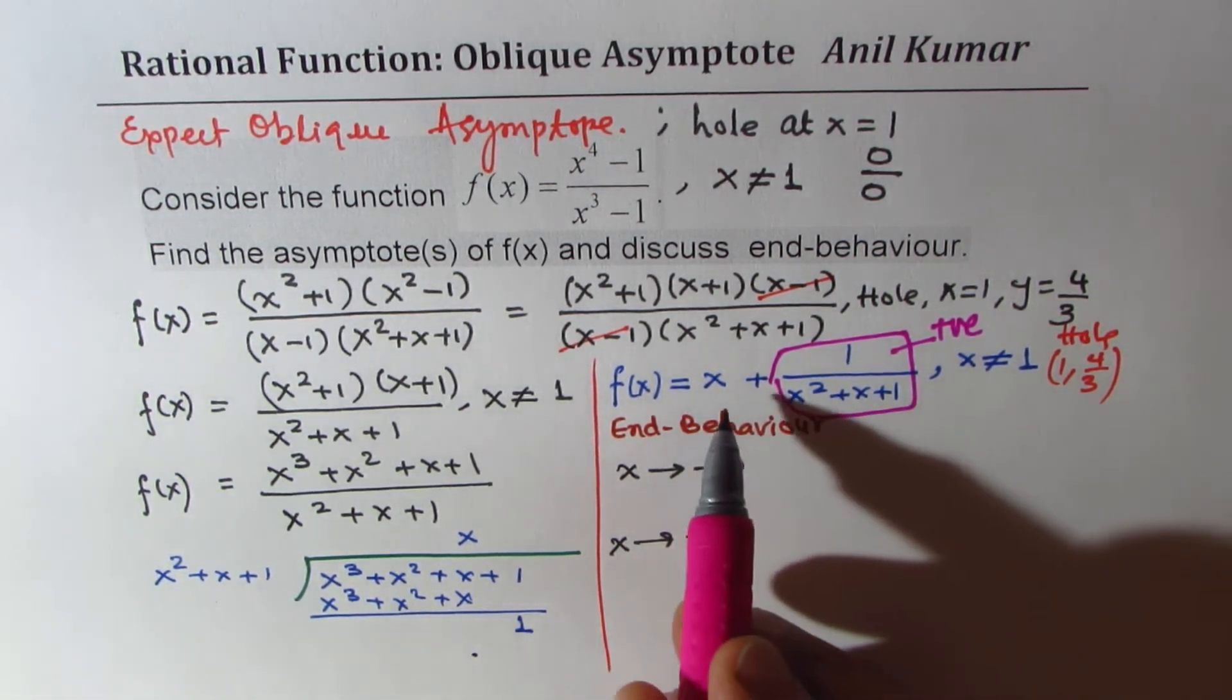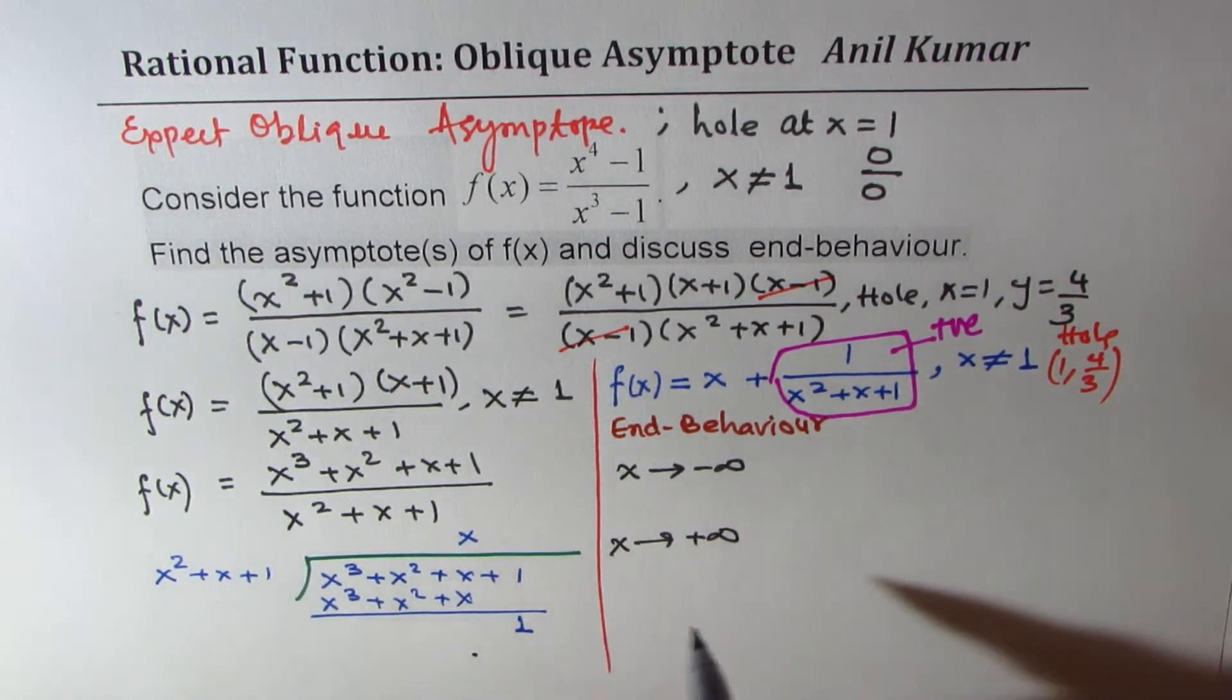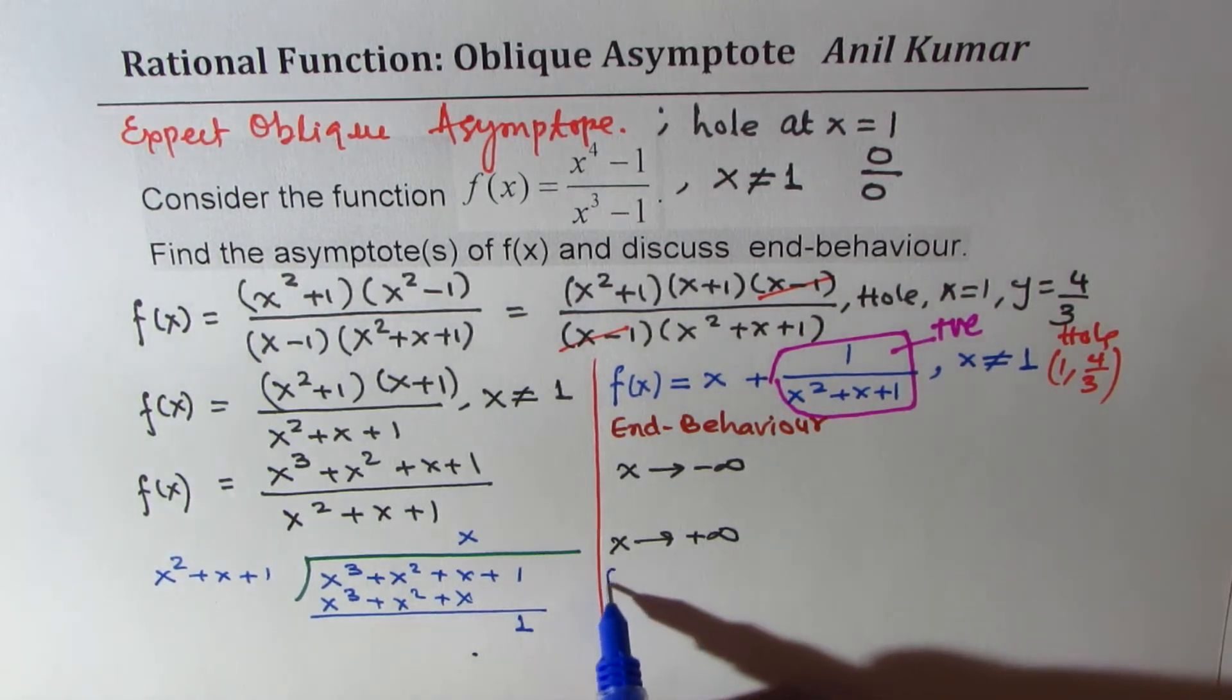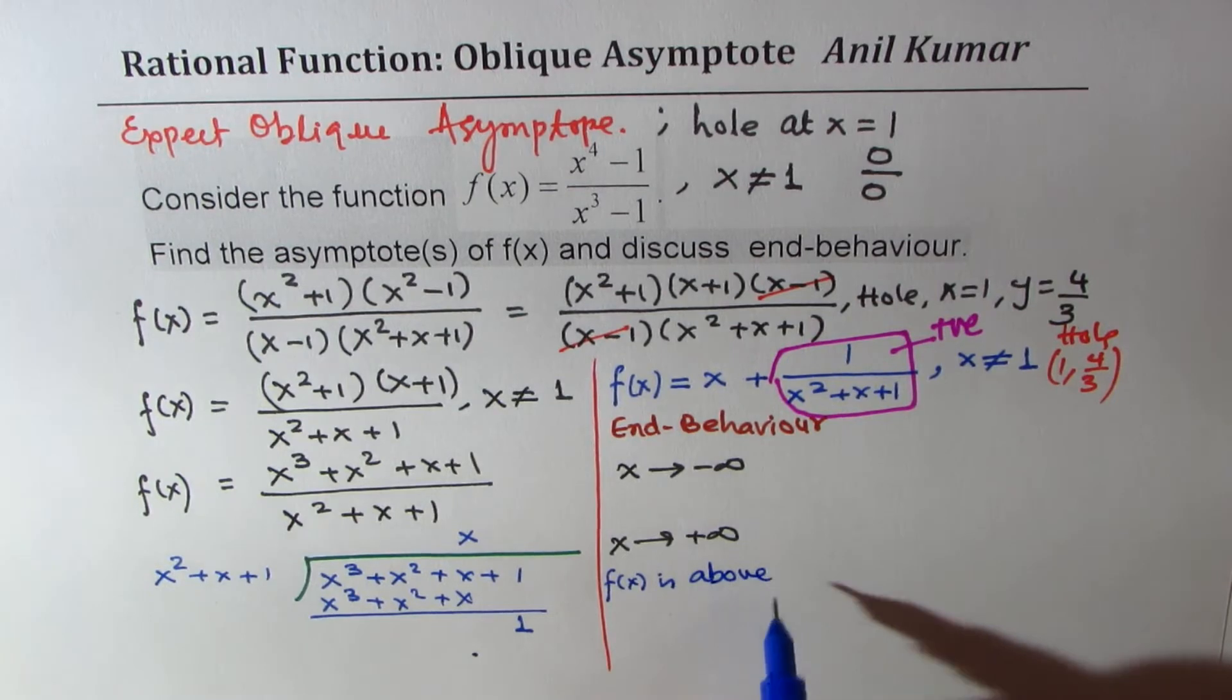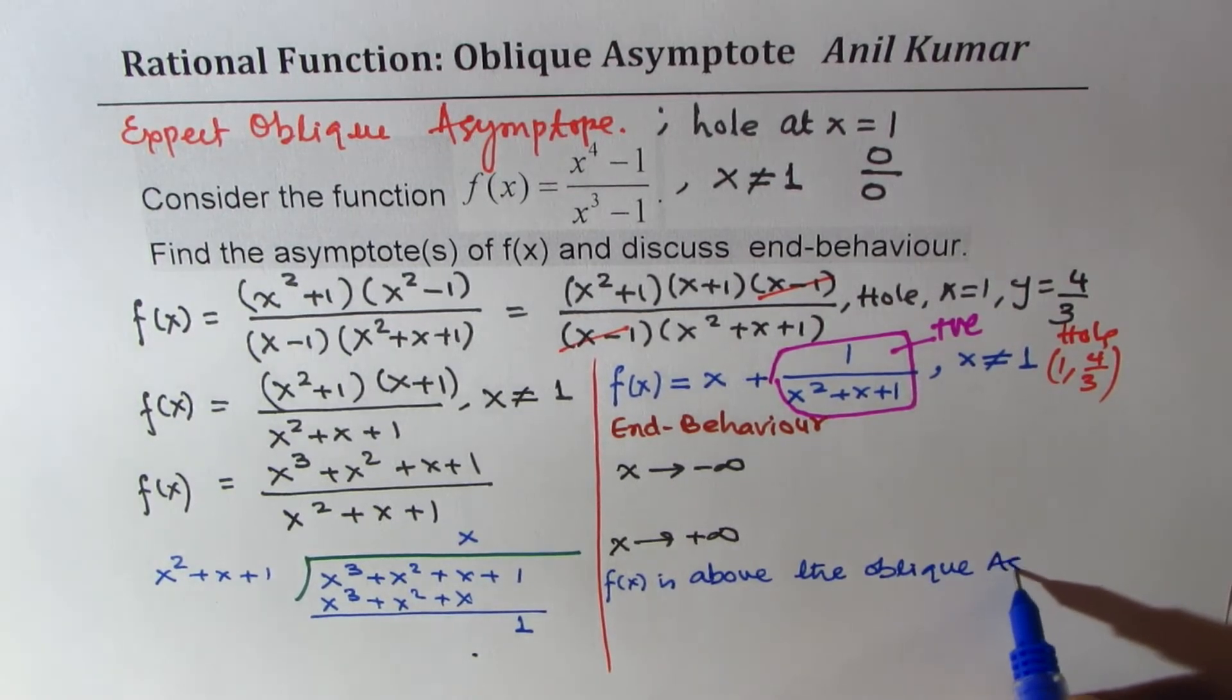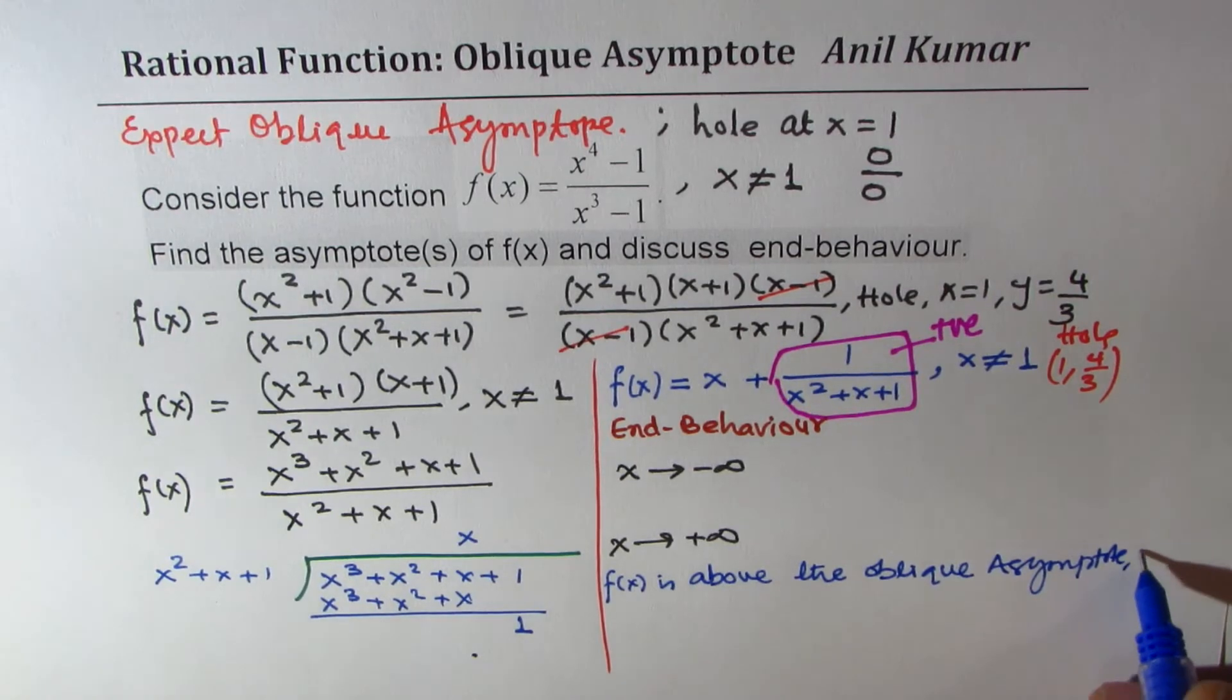So the function remains above this line. We could say, in both cases, we are looking into a situation where the graph of f(x), we could write here that f(x) is above the oblique asymptote, which is y equals x, correct?